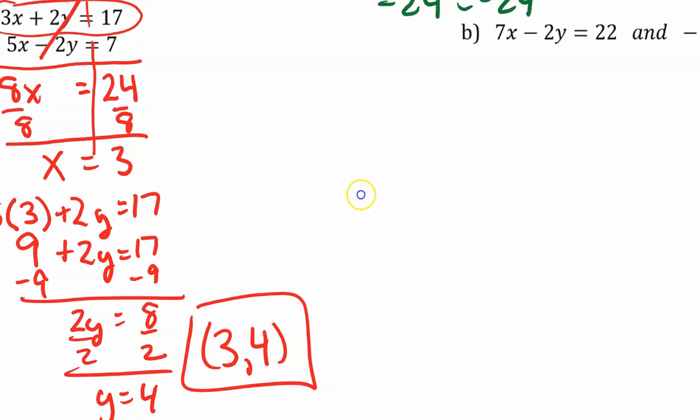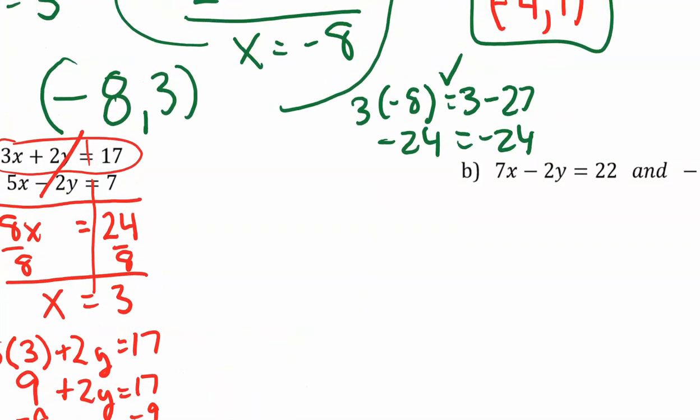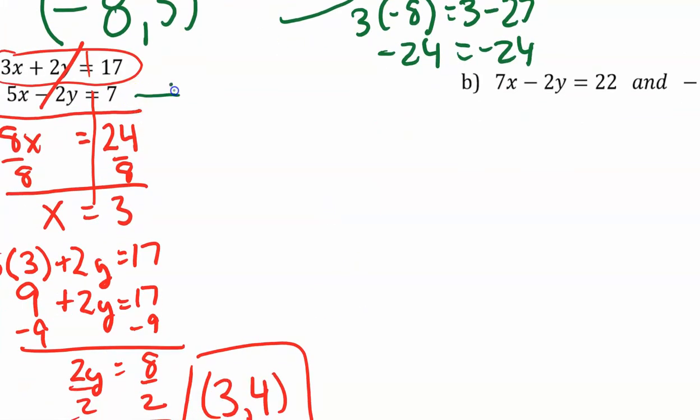Now I want to check my work. I'll use my second equation. 5 times 3 minus 2 times 4 should equal 7. 15 minus 8 equals 7. So we're good.